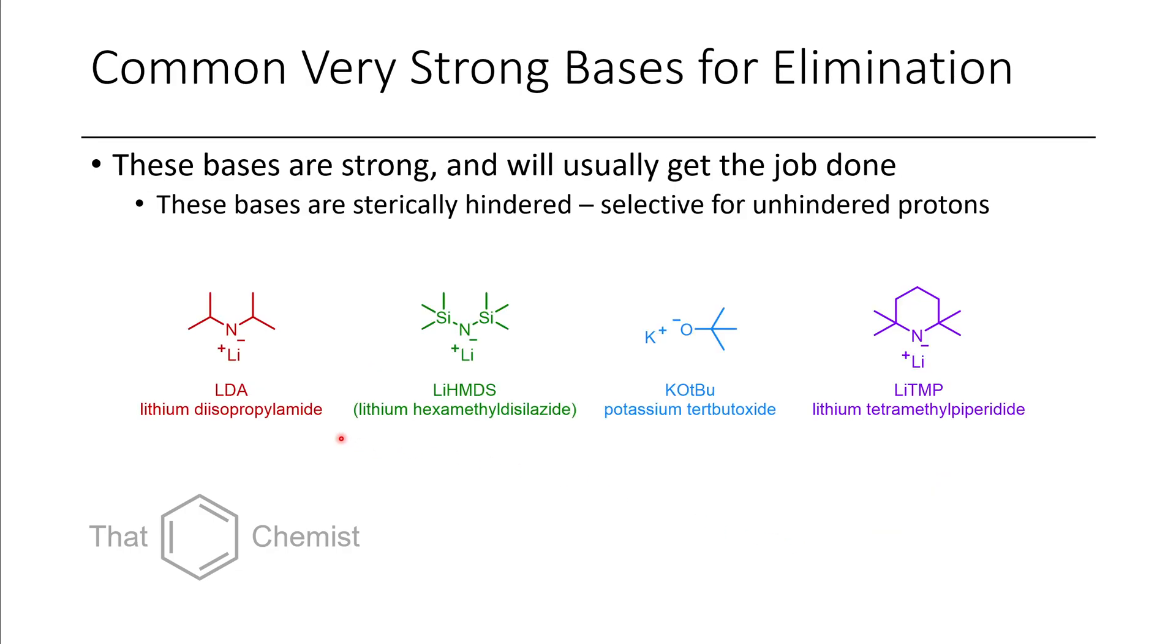Other bases you could use that are a little bit stronger and more sterically hindered would include lithium diisopropylamide (LDA), very common base in organic chemistry, lithium HMDS (hexamethyldisilazide), potassium tert-butoxide, lithium tetramethylpiperidide. These are all very commonly encountered. These are only used for elimination when necessary. Tert-butoxide is pretty much the go-to base, but these other ones could be used if you're struggling for some reason. Let's say the reaction is just not going with tert-butoxide at all, then you probably need a slightly stronger base. While tert-butanol has a pKa around 15-ish, these all have a pKa more in the realm of 30-ish, and it varies obviously depending on solvent. You might be wondering, could you have the potassium or sodium salts of these? Yes, you could. I've just listed the most common ones.